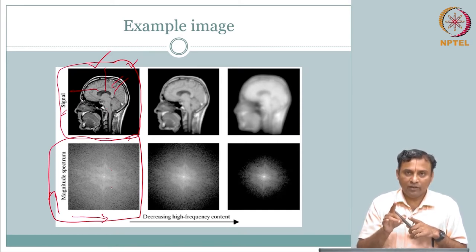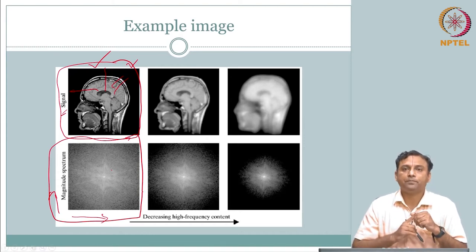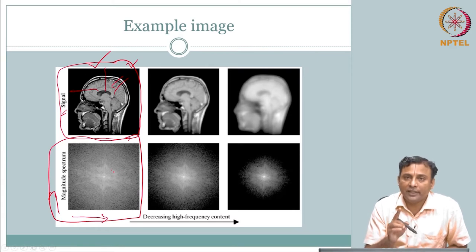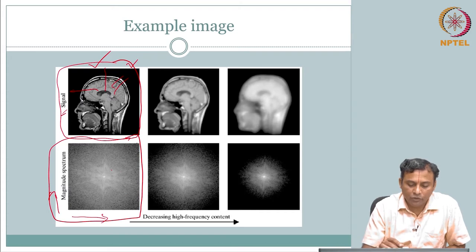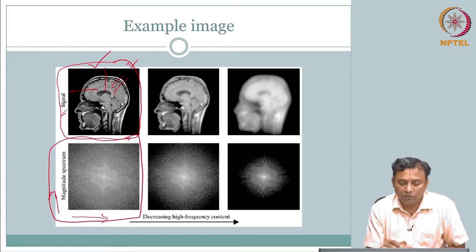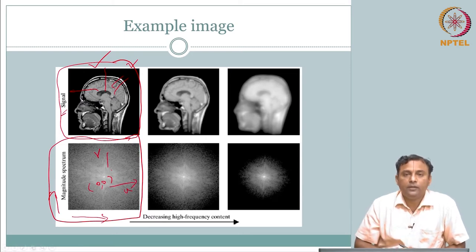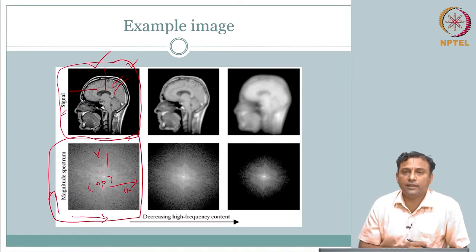We also saw an example where both u and v are non-zero — that is how this frequency plane is populated. One thing you can observe is a bright spot at the centre, which gets less dense as you go outwards toward higher frequencies. This is your frequency axis: the centre is (0, 0) — that is your origin. This is your u and there is your v, with positive and negative frequencies up and down.